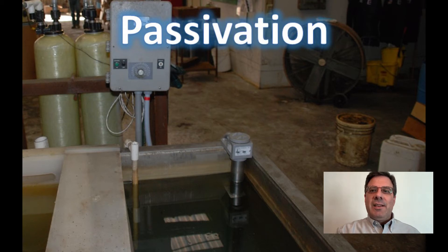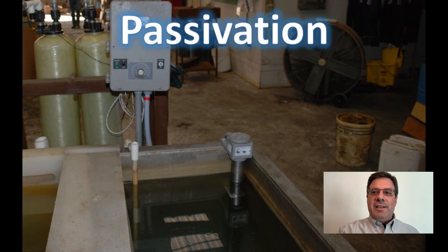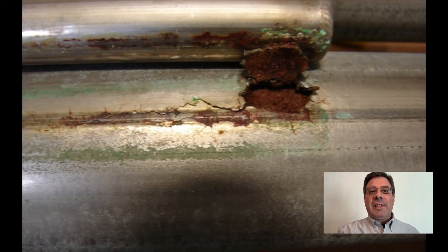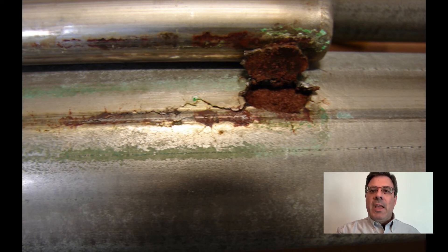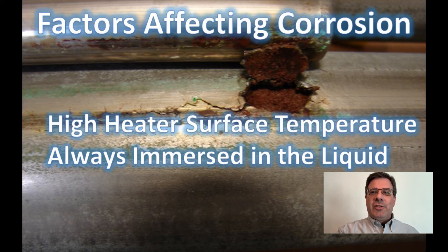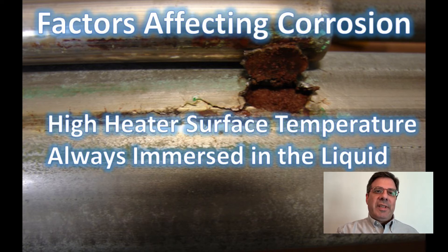Some customers may consider stainless steel heaters as suitable for a passivation tank because they expect the chemical will just passivate the metal. Also, the tank itself may be stainless steel. Unfortunately, there are a few key factors which can result in the passivation chemistry corroding the heater. First, when the heater is energized, the surface temperature of the heater is a lot hotter than the bulk liquid temperature. That higher temperature means there's more energy present on the surface of the heater, which could trigger or accelerate corrosion.